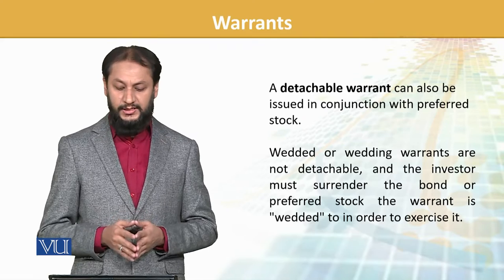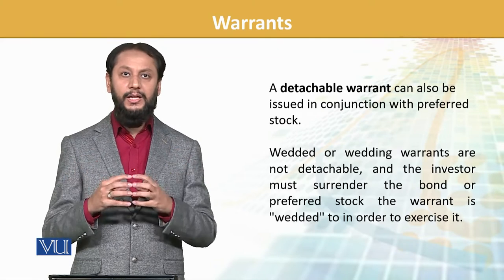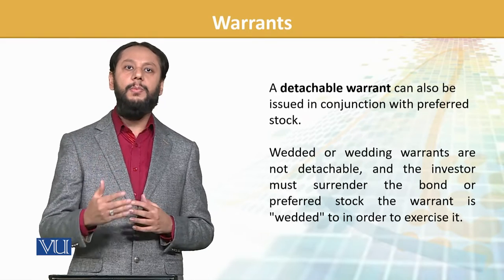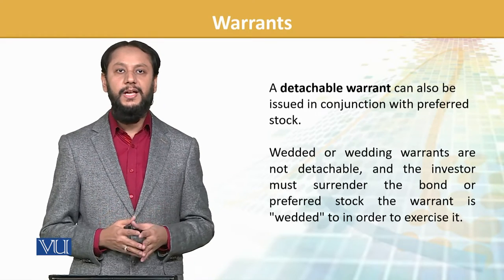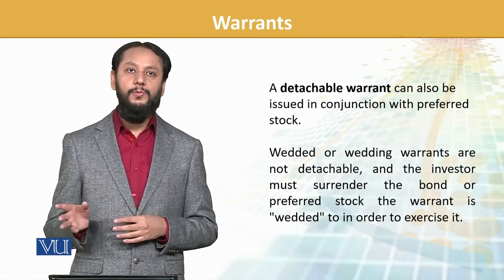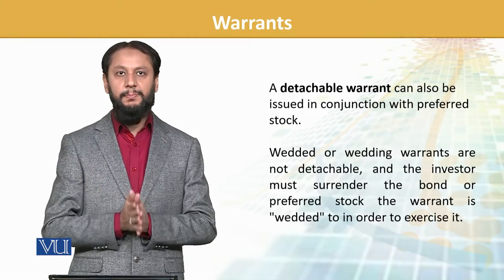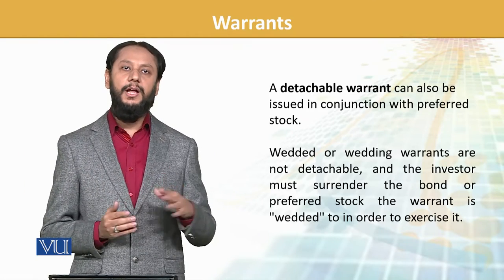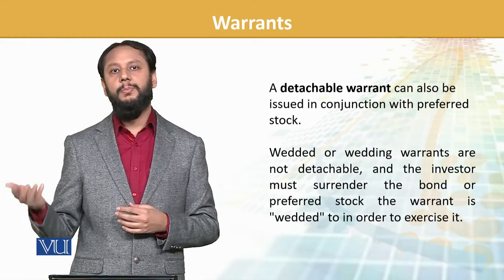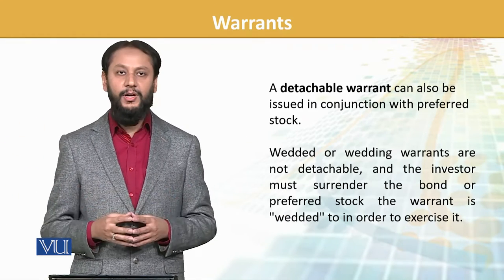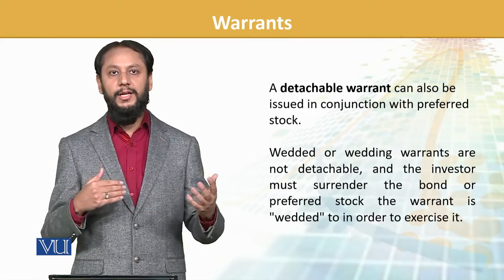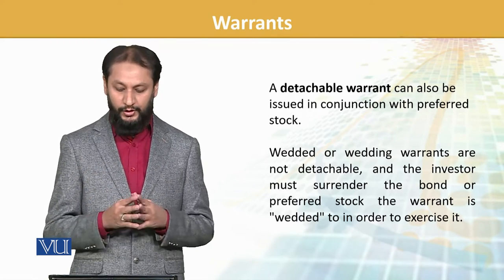Wedded or wedding warrants are not detachable — they are engraved into the bond. If an investor wants to exercise the warrants, they must also surrender their bond. The difference from detachable is that in detachable warrants, the bond and warrant are held separately and the warrant can be exercised independently. But when wedded, both parts are engraved together — to exercise one, you have to give up both parts.